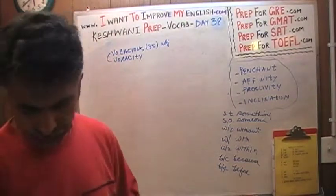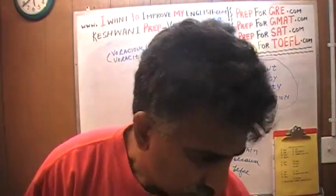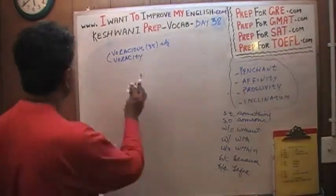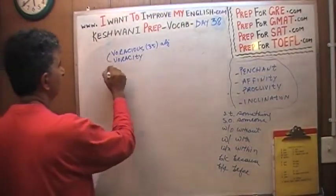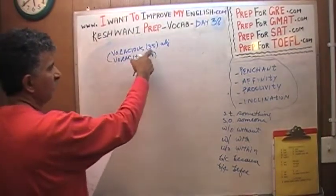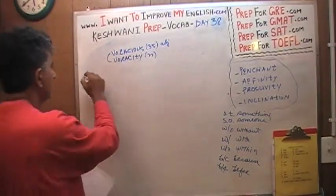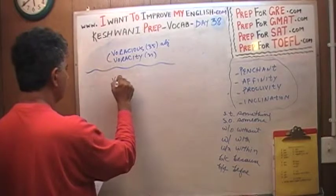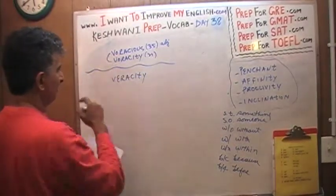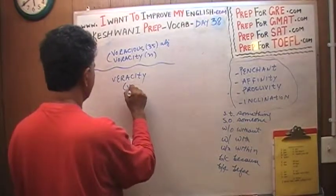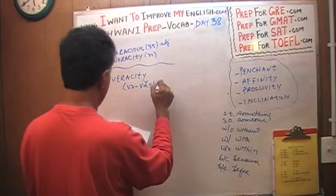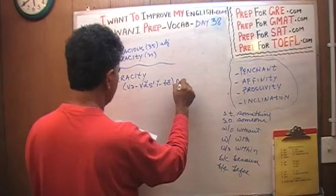Today we are going to learn a word with a different spelling. This is the noun of the word voracious. If you don't know what voracious is, just go and watch the video for day 35. The word I want to start with today is veracity — V-E, as opposed to V-O.